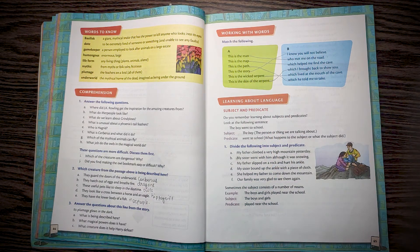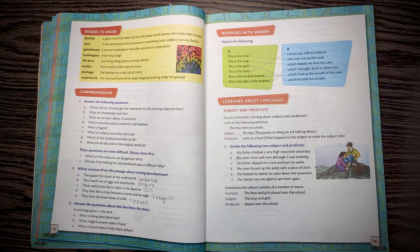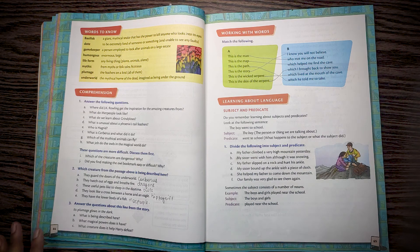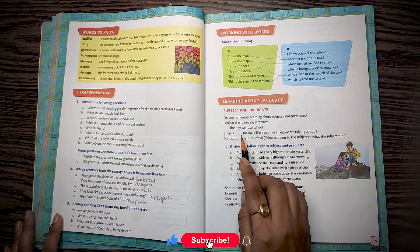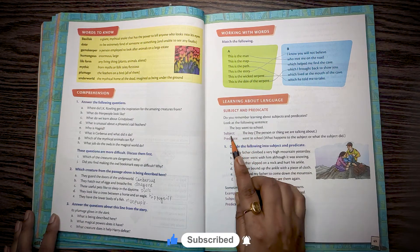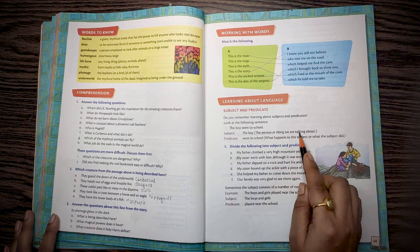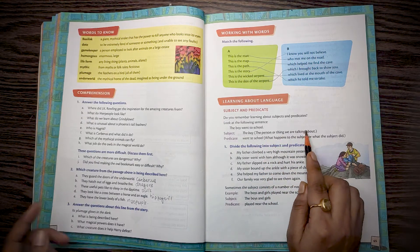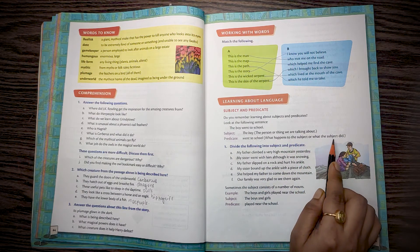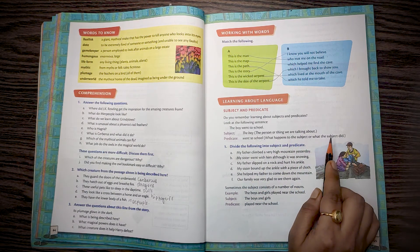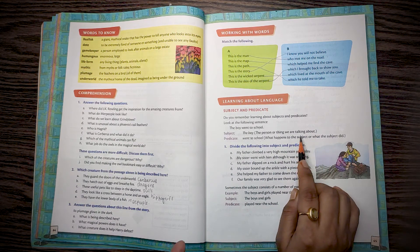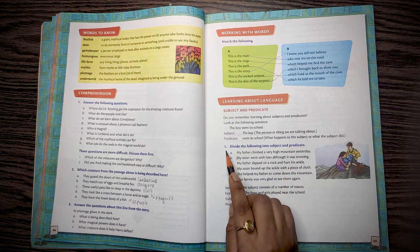Learning about language. Subject and predicate. We all know that in one sentence there is subject and predicate. Example: The boy went to school. Subject is the boy, the person or the thing we are talking about. Predicate is went to school, what happens to the subject or what the subject did. In other words, what you want to say about the subject, all of that is the predicate.